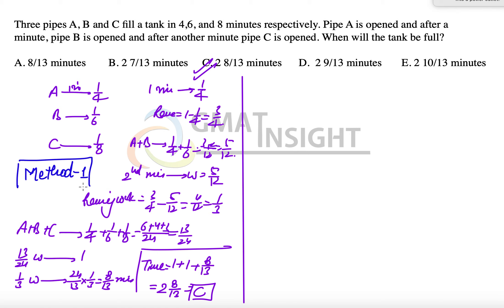Now method 2 is going to be a really beautiful method. So please pay attention to it. Method 2 makes the equation very strategically. Now we know that A's rate, that means A's 1 minute work is 1/4. Similarly B's 1 minute work is 1/6 and C's 1 minute work is 1/8.